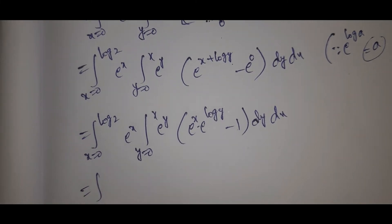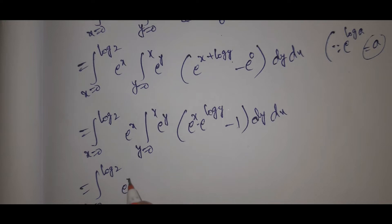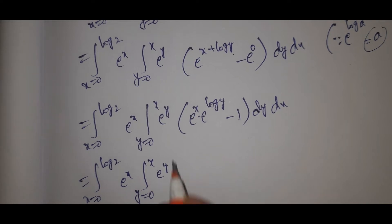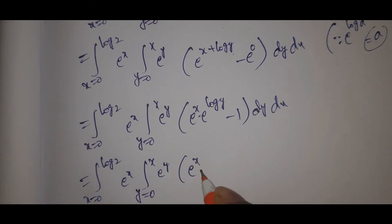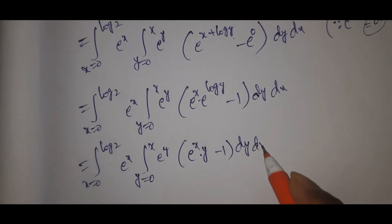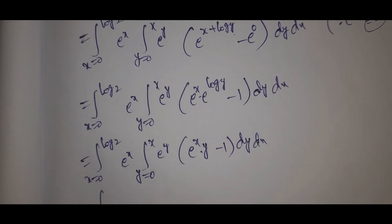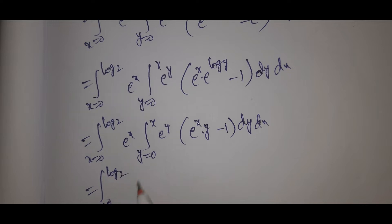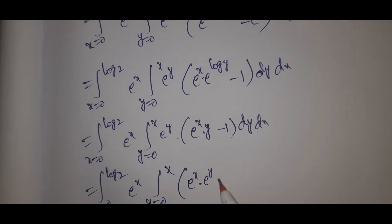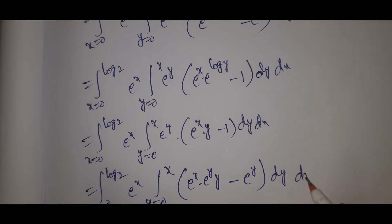So we have the integral x from 0 to log 2, y from 0 to x of e to the power y, times y from 0 to x of e to the power x into e to the power y into y, minus e to the power y, dy dx.